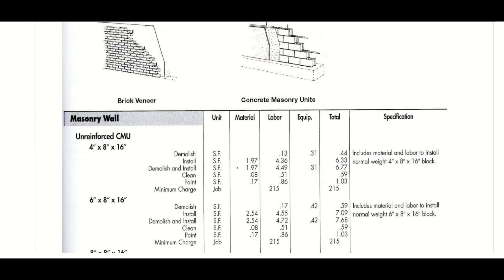Let's look at a means guide for installing masonry. With masonry, you're going to see a lot of demolition. And starting with your unreinforced CMU, that's your concrete masonry unit right here, 13 cents per square foot to demolish. Everything is in square feet, not the ground square feet.